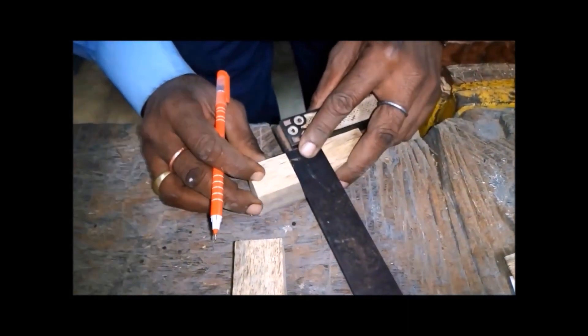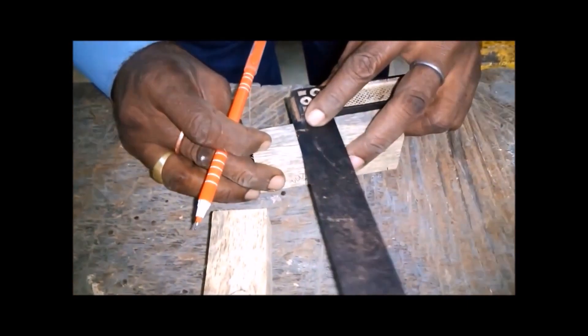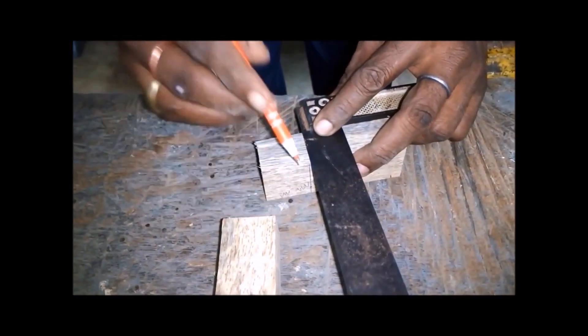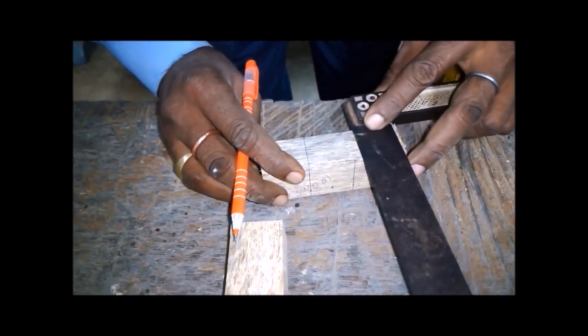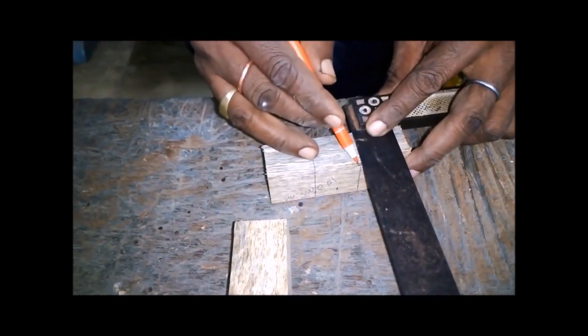Extending the lines all around the workpiece using the tri-square. They exactly meet because the wood is square.